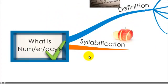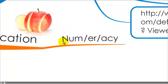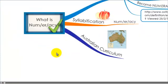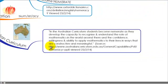So what is the syllabification of this word, which is numeracy, and that is num-er-acy which helps you pronounce it. And numeracy is part of the Australian Curriculum and the Australian Curriculum states that students become numerate, which means they have abilities with numbers, as they develop the capacity to recognize and understand the role of maths in the world around them, and have the confidence, willingness and ability to apply maths to your lives in ways that are constructive and meaningful.